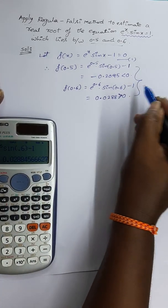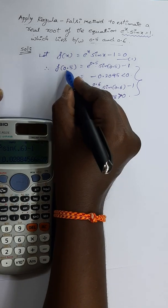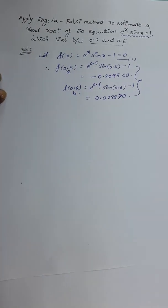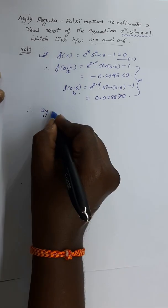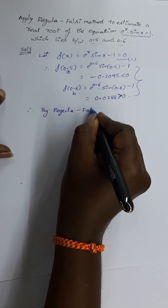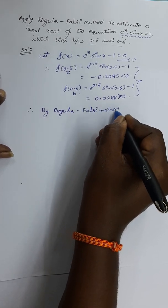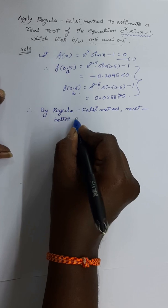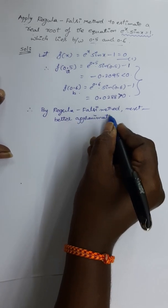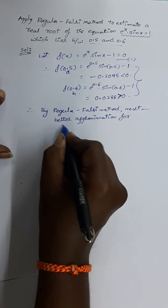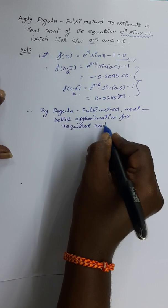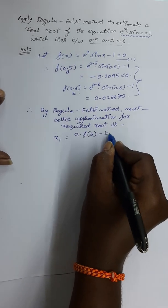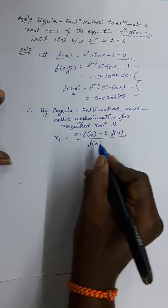According to the intermediate value theorem, we observe that the required root lies between 0.5 and 0.6. So take a = 0.5 and b = 0.6. By the Regula-Falsi method, we can find the next better approximation. The formula is: x1 = [a · f(b) − b · f(a)] / [f(b) − f(a)].